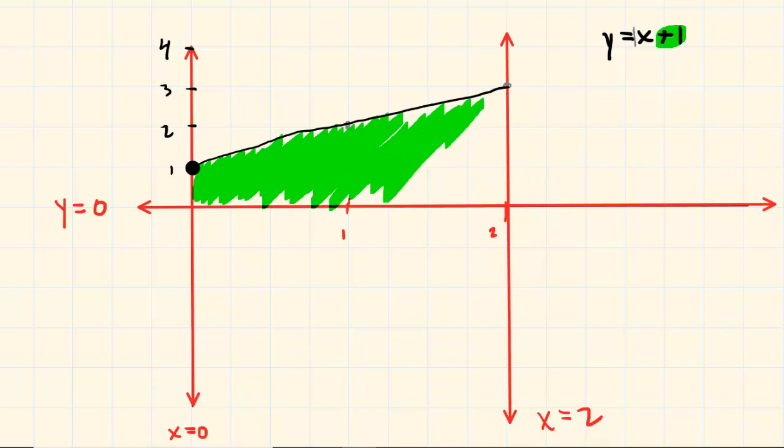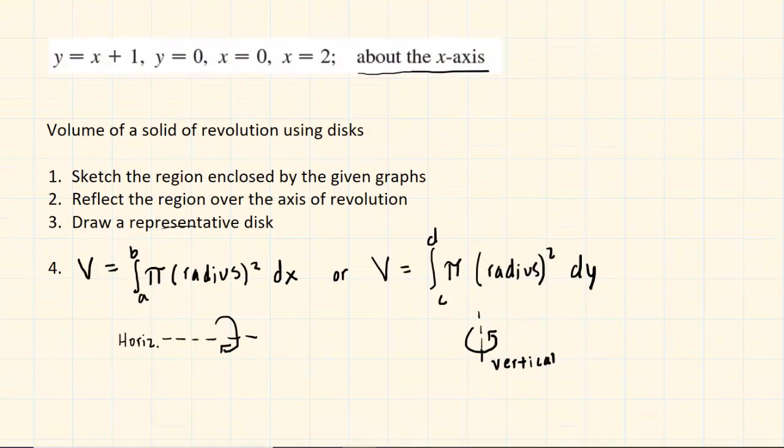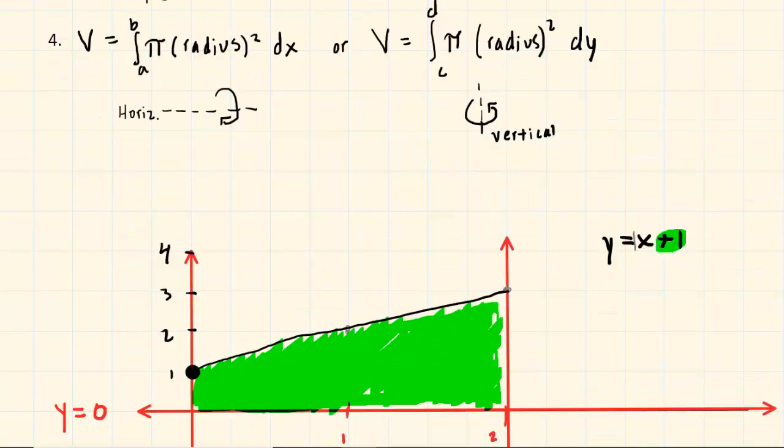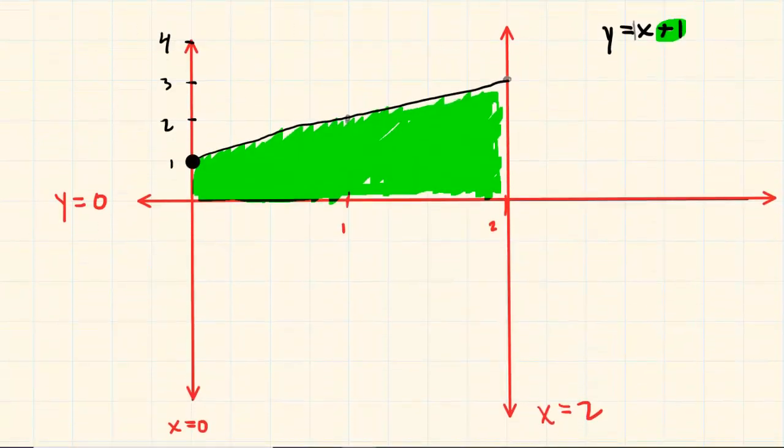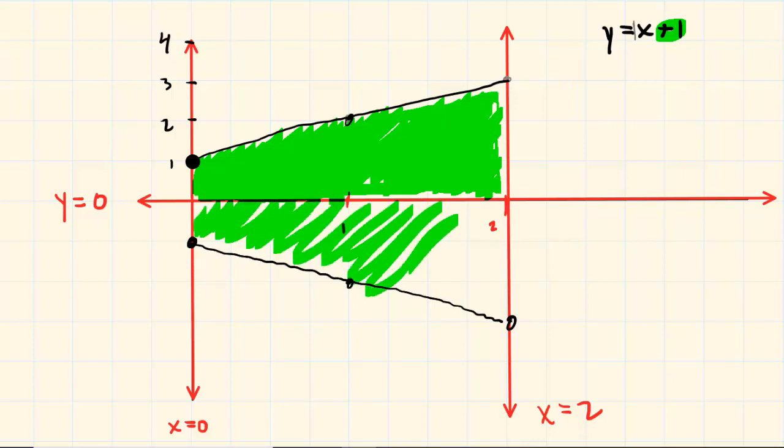The second step was to reflect this region over the axis of revolution. Now, let's recall that the axis of revolution in this question was the x-axis. So we're going to reflect this green region over the x-axis. So this point right here at 0, 1 would end up down at 0, negative 1. This point here, which is two units from the x-axis, would end up two units below the x-axis. This would end up three units below the x-axis. So we reflect the region, we connect these lines or these points with a straight line, and then we get the reflected region right here. So that completes step two.